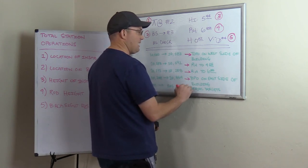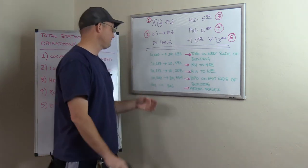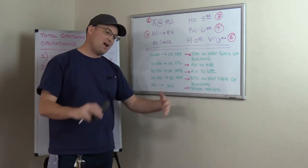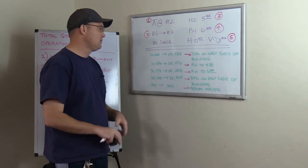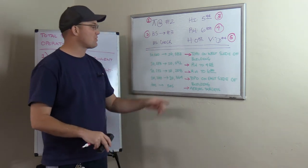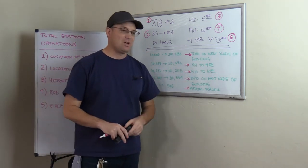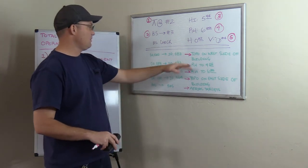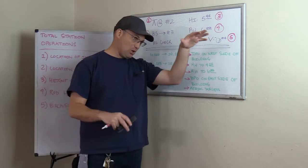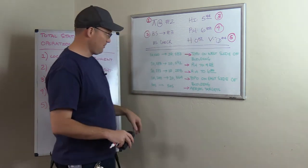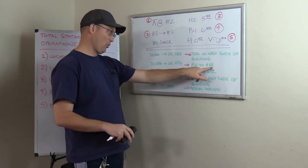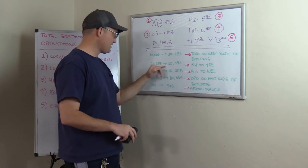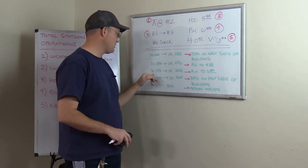So in this example, they shot a topo on the west side of the building. And then every time at my shop that you change your rod height during a total station survey, we make you write down the change. And that's so we can avoid busted rod height. So right here he was, the party chief needed to get under some trees or maybe a building overhang. So we lowered the rod to a 4.25 for this set of shots, 10,183 to 10,192.